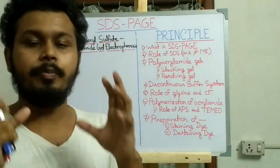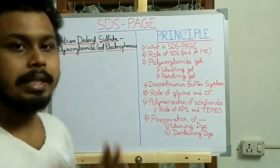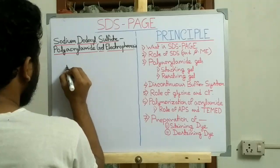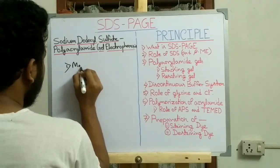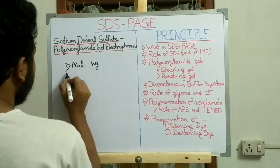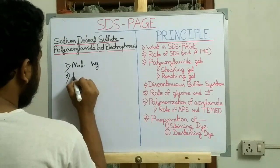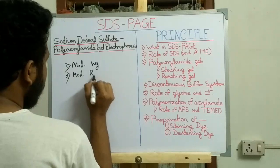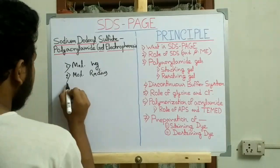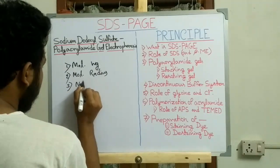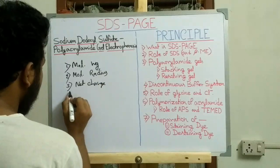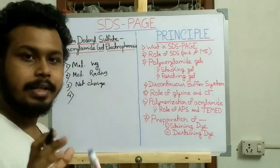The movement of protein on the polyacrylamide gel depends on four factors: one is the molecular weight of the protein, the second is the molecular radius of the protein, third is the net charge of the protein, and fourth is the applied current.